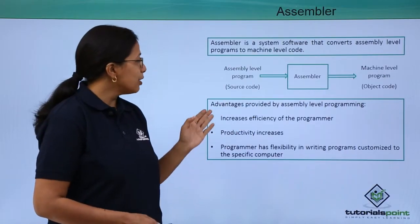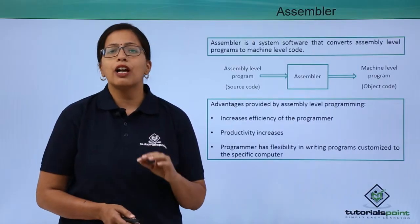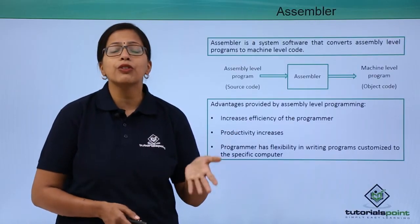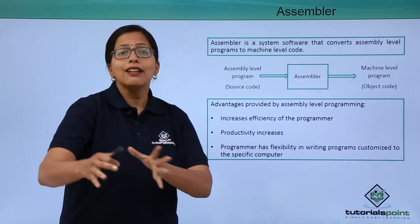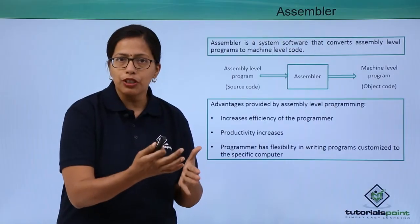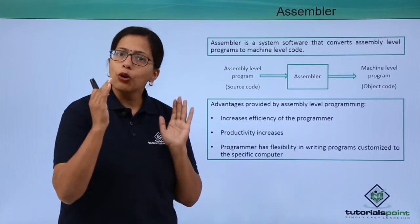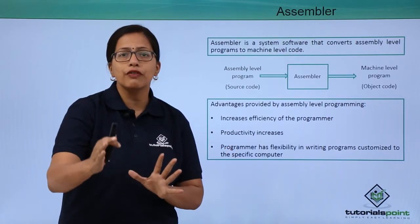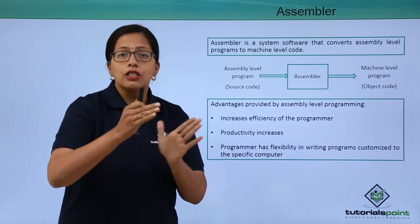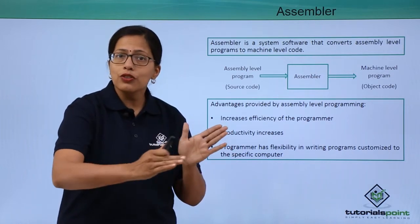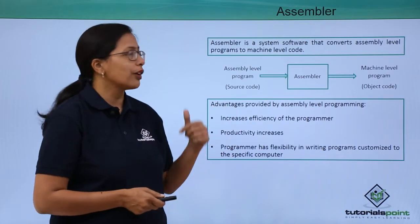Why do we need assemblers? Assemblers are needed because they increase the efficiency of the programmer. If we are not using assemblers, then programmers would have to write instructions in machine level language, which is just zeros and ones. For example, if I want to tell the computer to add 2 and 3, that whole instruction has to be written as a string of zeros and ones — 'add' might be represented as 1 0 1 0 1, and 2 as 0 1 0.